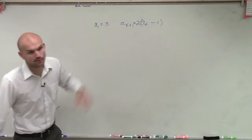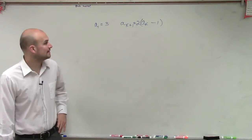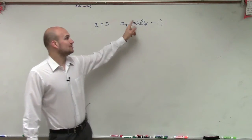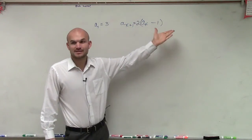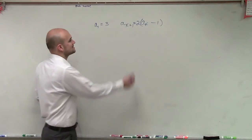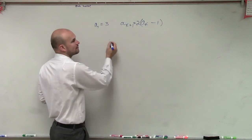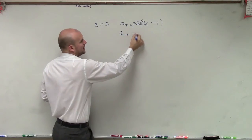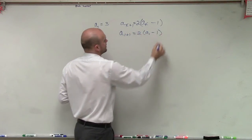So we know that a sub 1 equals 3. So what they're saying is a sub k plus 1 equals 2 times a sub k minus 1. So let's go ahead and plug in 1 in for our k. So therefore, we'd have a sub 1 plus 1 equals 2 times a sub 1 minus 1.